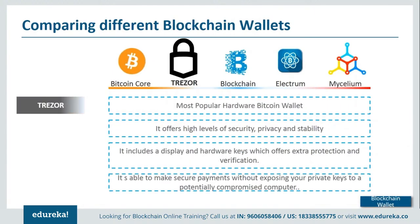Next is Trezor, one of the most popular hardware wallets. It comes with a display and two physical keys that help you verify transactions and add another layer of protection. The security feature of Trezor and hardware wallets in general is very high compared to other wallets. However, with respect to ease of use, hardware wallets are not very comfortable when you're on the go or need to initiate a transaction quickly.